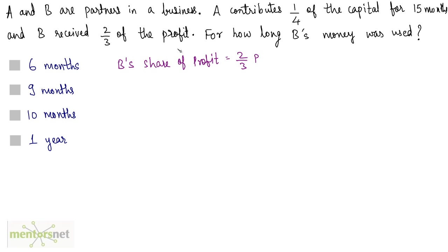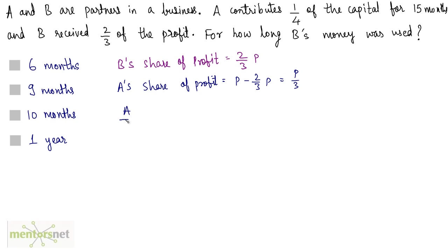The total profit is P and B gets 2 thirds of that. So we can calculate A's share of profit, which is equal to the total profit P minus B's share of 2 by 3 P, and that equals P by 3. Now we have A's share and B's share, so A is to B equals P by 3 divided by 2 by 3 P. P and 3 cancel out, giving 1 by 2. So the profit share of A is to B is equal to 1 is to 2.